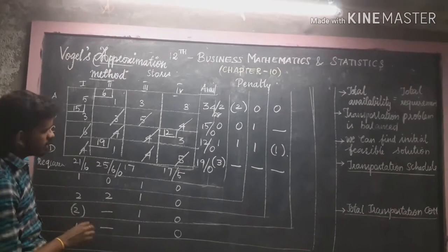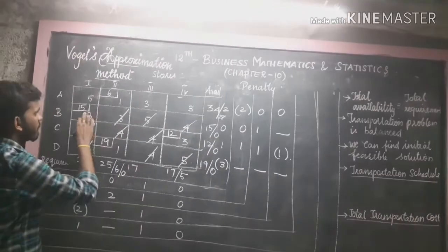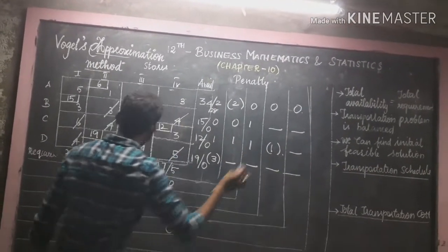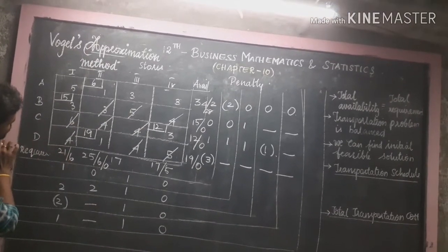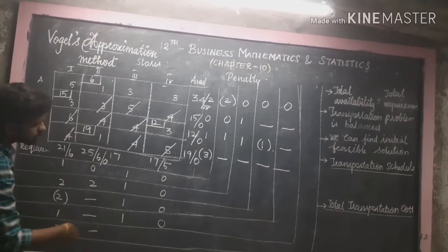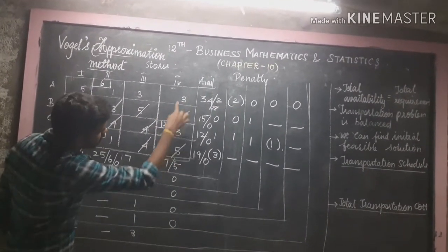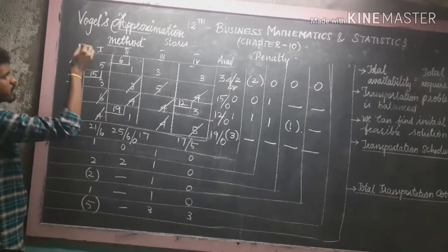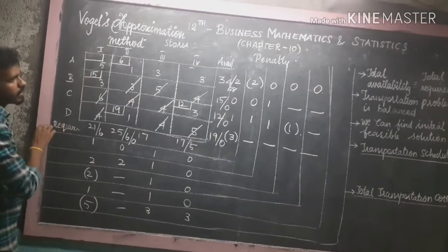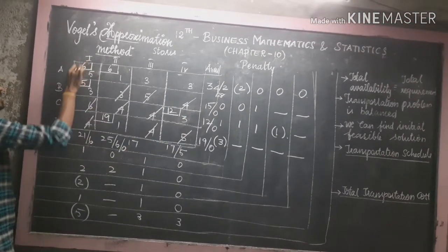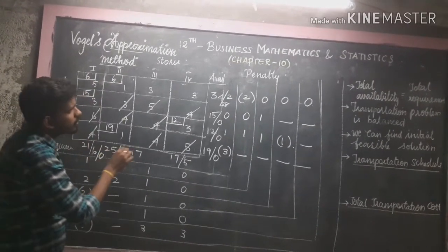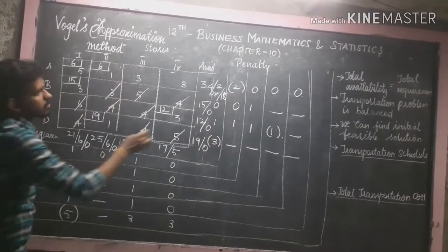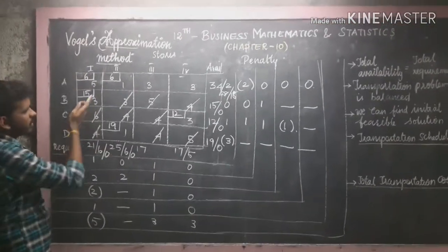For the fifth allocation, penalties are recalculated: 3 minus 3 equals 0 for the remaining row. For columns: 5 remains as the only value. The highest penalty is 5. Only one value is available: 5. Comparing 28 and 6, we take 6 (the least). After allocation: 6 becomes 0 and 28 minus 6 equals 18. The corresponding row has no further allocation.